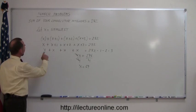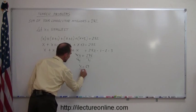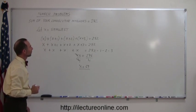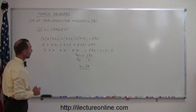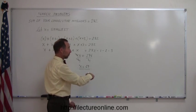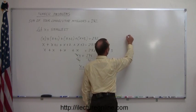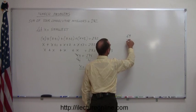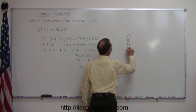So the smallest of the consecutive numbers is x equal 69. That means that the next one is one more, the next one is one more, and so forth, so the four numbers are 69, 70, 71, and 72.